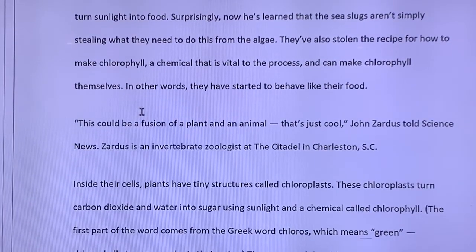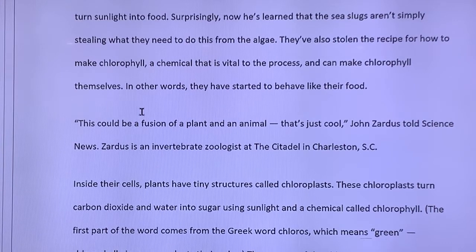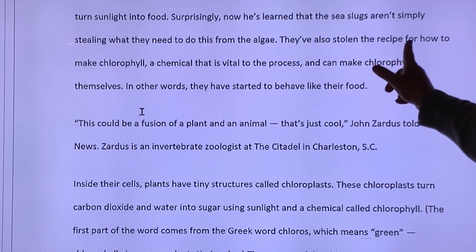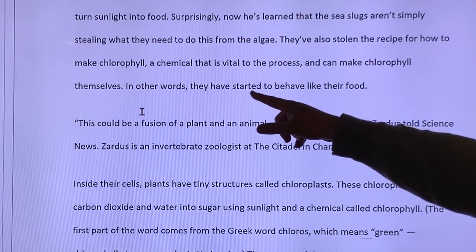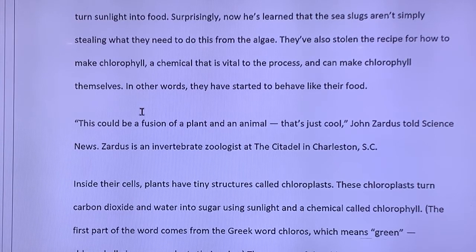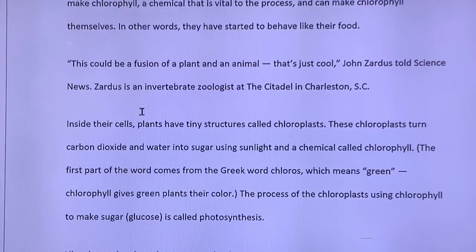At a recent meeting of scientists, a biologist named Sydney K. Pierce reported a surprising observation in these algae eating sea slugs. Pierce does his research at the University of South Florida in Tampa. What's the only thing that's important in that paragraph? It's a research by a scientist who works at a university. So is it good research? That's the only thing you really get from that paragraph. Pierce already knew that these sea animals, just like plants, have the right chemical tools to turn sunlight into food. Surprisingly, now he's learned that sea slugs aren't simply stealing what they eat from the algae. They've also stolen the recipe for how to make chlorophyll, a chemical that is vital to the process of making chlorophyll themselves. In other words, they have started to behave like their food. Is that important for explaining how this animals become sort of like a plant? So what they've done is they've stolen the chemical recipe for how to make chlorophyll and now they can make it themselves. So we can't do that. We have no chlorophyll in our body. Unless you're eating plants, then you've got that in there, but you have not got chlorophyll in your cells. But this sea slug now does. Important paragraph. Probably highlight it, circle that, star next to it, make a point.